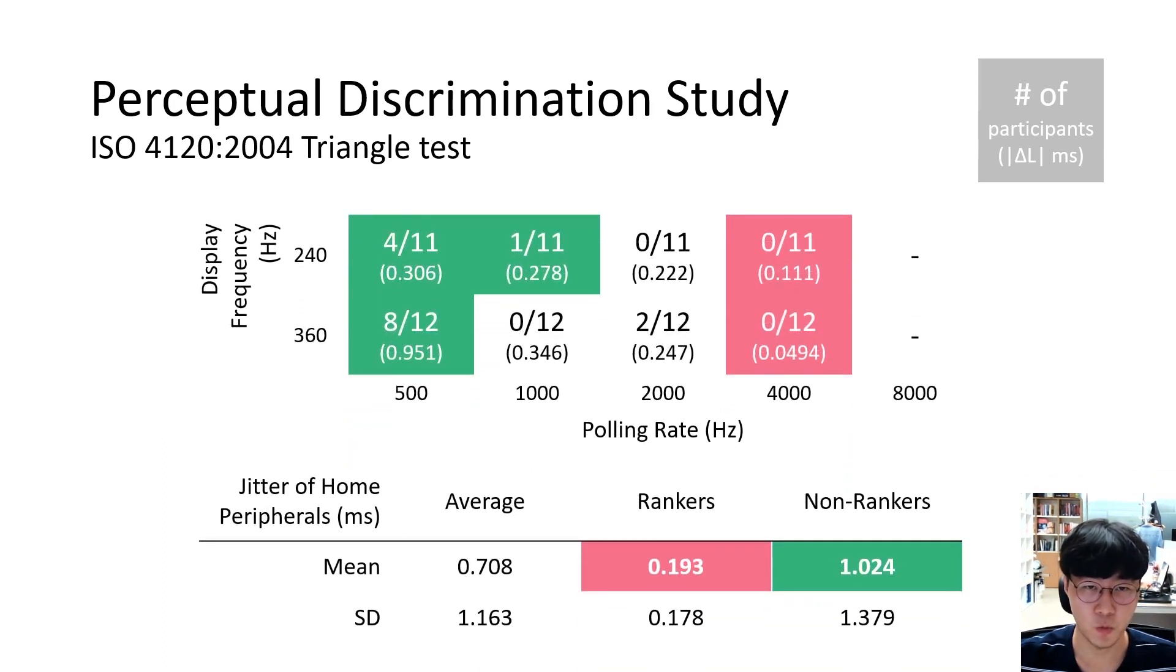From participants, we assessed their most used peripherals and calculated their expected size of jitter using a theoretical model. Over half of the participants could distinguish jitters smaller than those in the average non-ranker environment, whereas no participant could distinguish the jitter in the average ranker environment. This implies that peripherals of the current rankers might be sufficient for minimizing perceptible jitters.